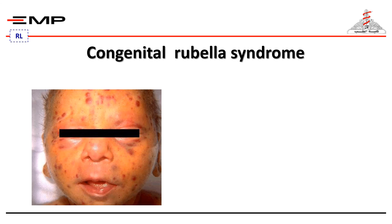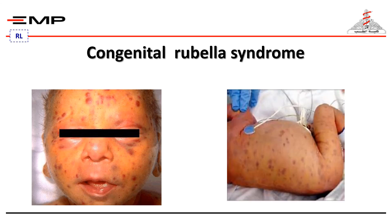Diagnosis of congenital rubella includes PCR from CSF, urine, or blood, as well as serology with IgG and rising titers of IgM, and imaging for associated morbidities. Prevention is of major importance given how highly teratogenic this virus is. Immune status should be verified prior to pregnancy, and immunization is contraindicated during pregnancy. Unfortunately, there is no available treatment.